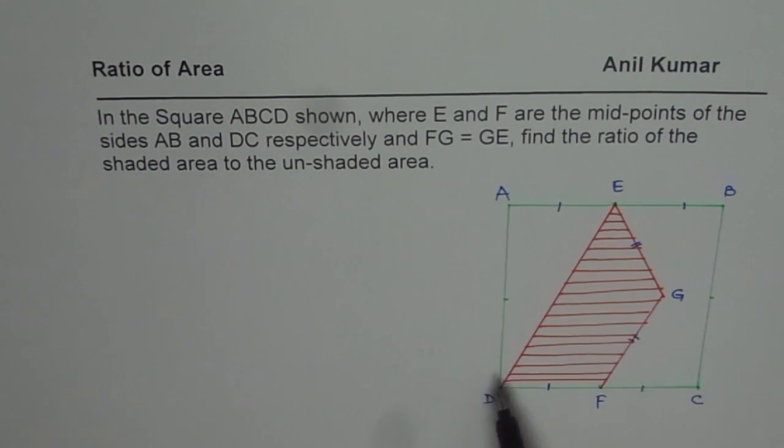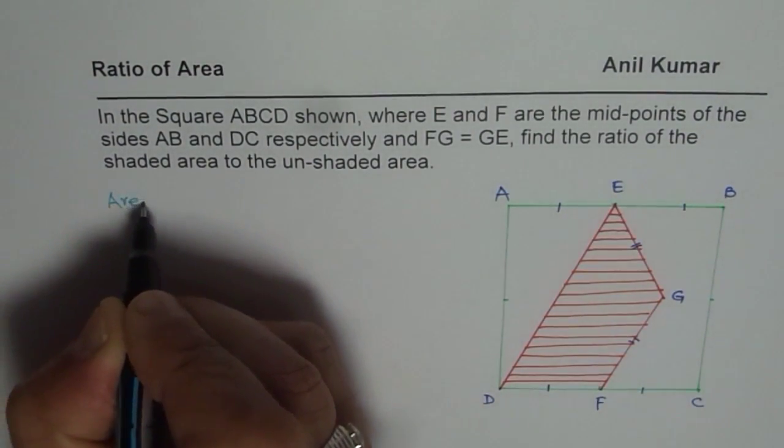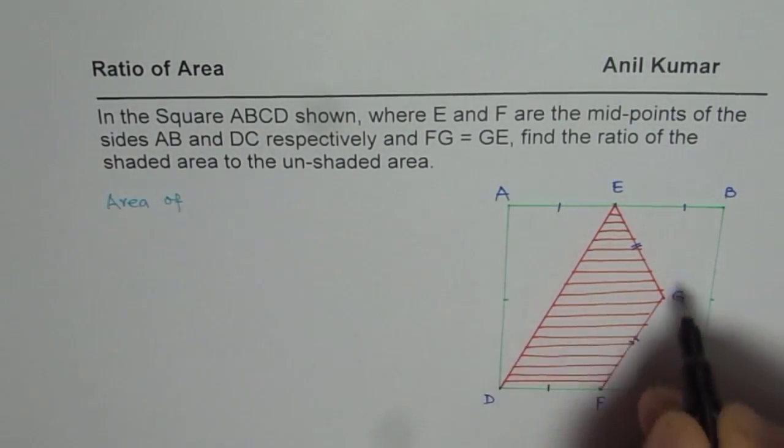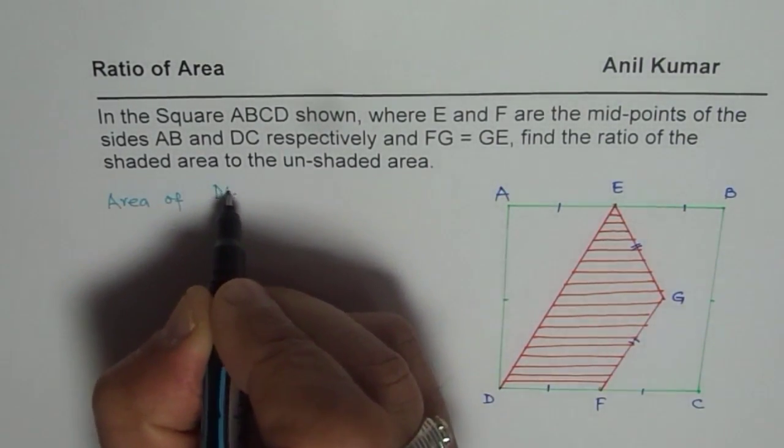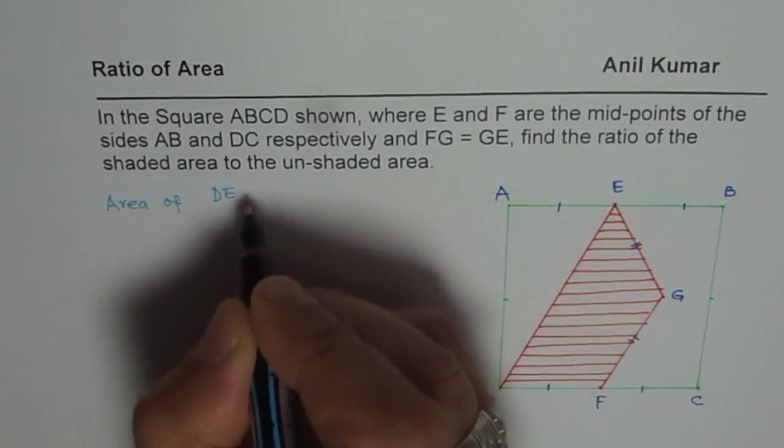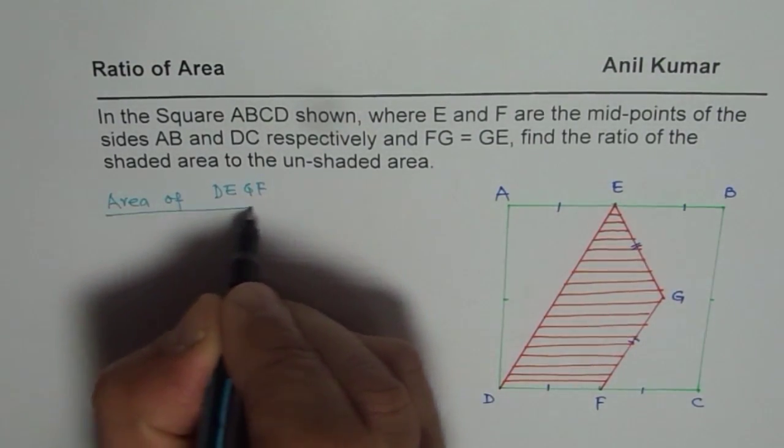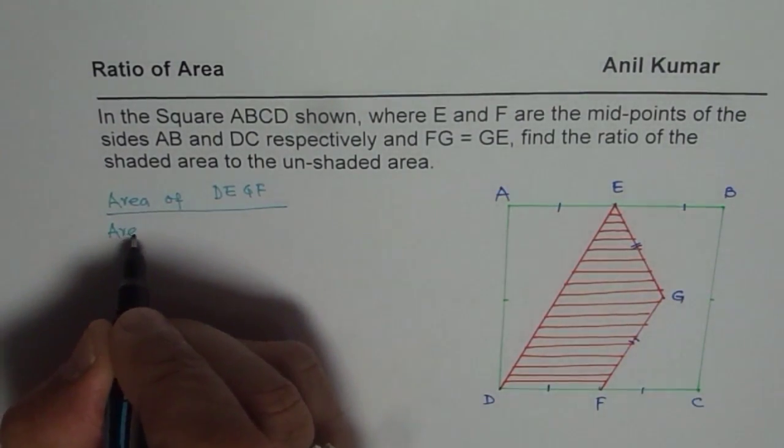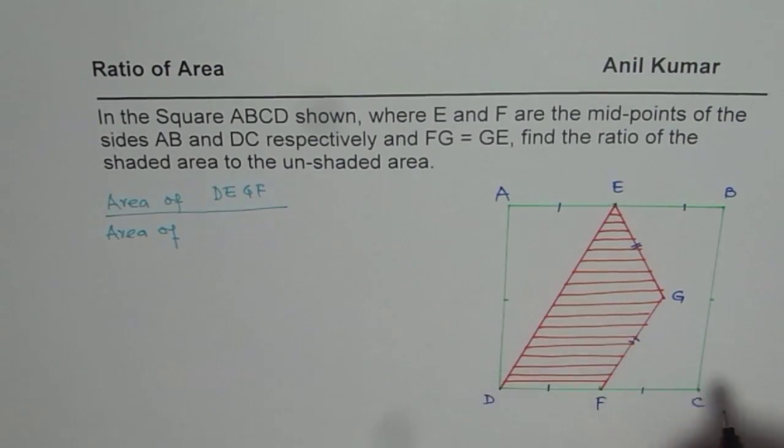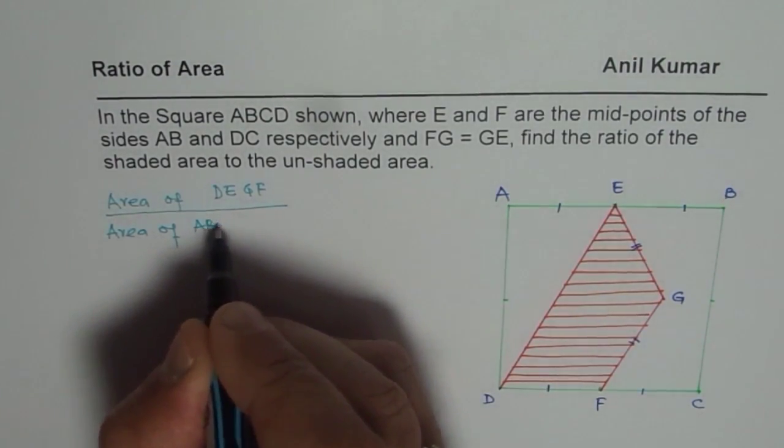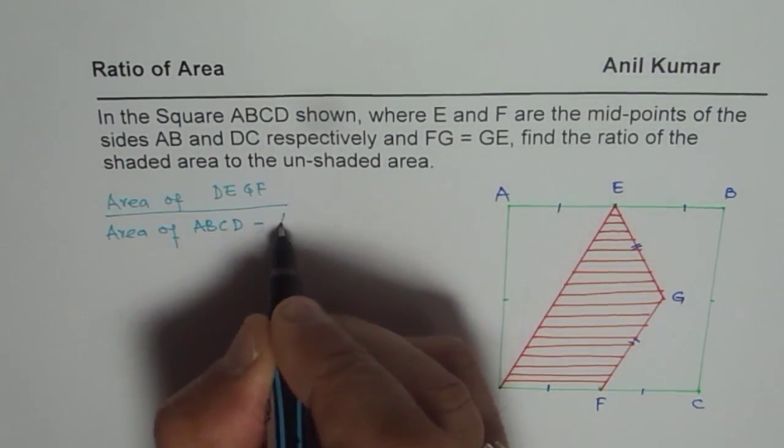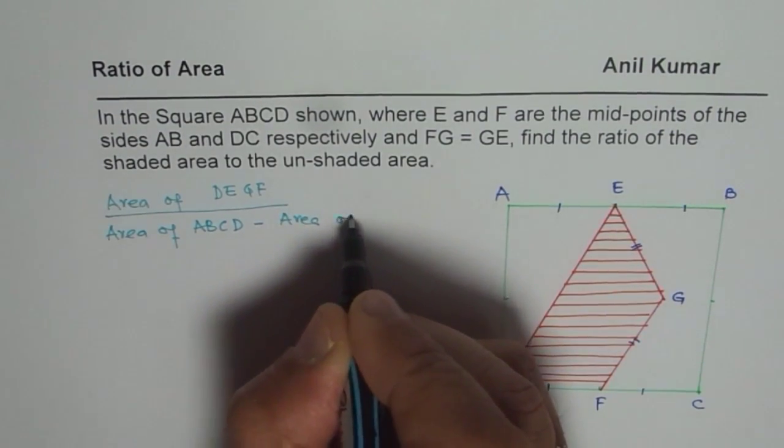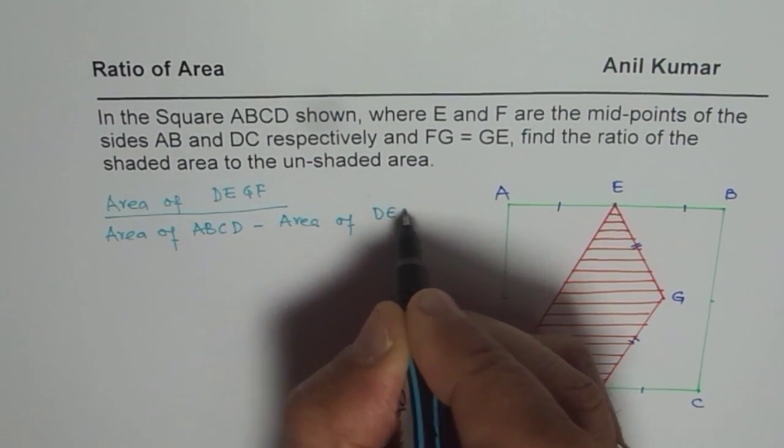This shaded region here is DEFG. We need to compare area of DEGF over the blank area. That means area of square ABCD minus area of DEGF.